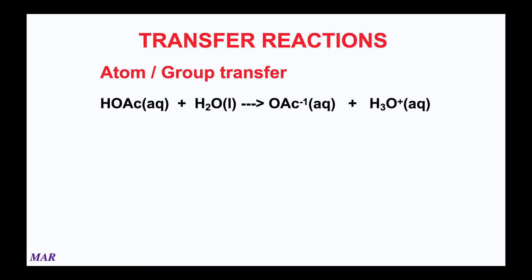In chemistry, there are basically two kinds of reactions. One kind involves an atom or group of atoms being transferred. This is an example of acetic acid reacting with water — it makes the acetate ion and hydronium. We've talked about this reaction a lot already; this is an example of an atom being transferred from the acid, acetic acid, to the base water to make the conjugate base acetate and hydronium.